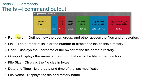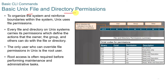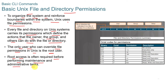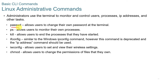The ls -i command shows permissions, which define how the user, group, or others have access to files and directories, along with the number of links, directories inside that directory, the user, group, file size, date and time, and file name. Unix uses file permissions to organize the system and enforce boundaries. Every file and directory on a Unix system carries permissions defining what the owner, group, and others can do. The only user who can override file permissions in Unix is the root user, who is often required before performing maintenance and administrative tasks.